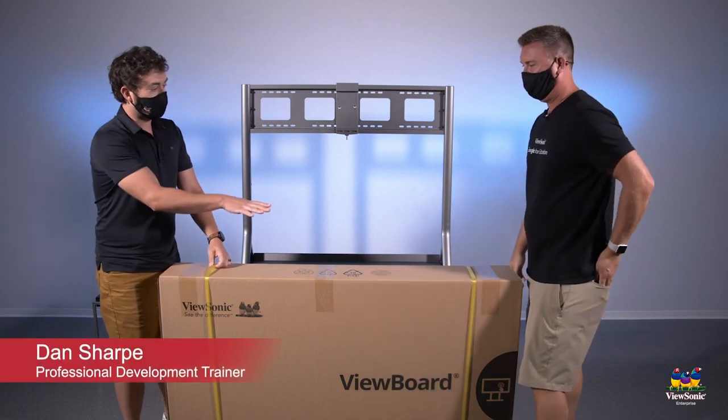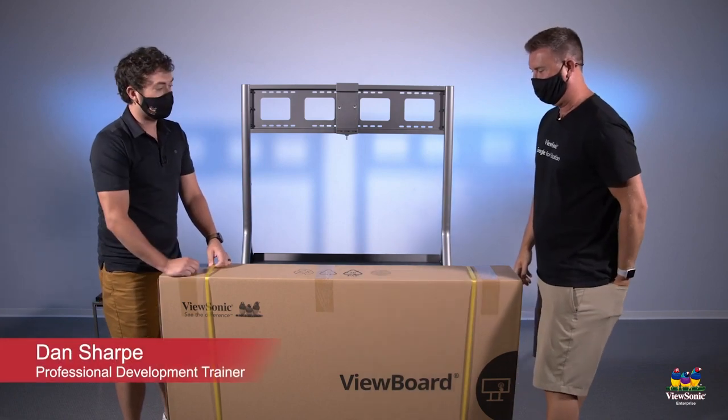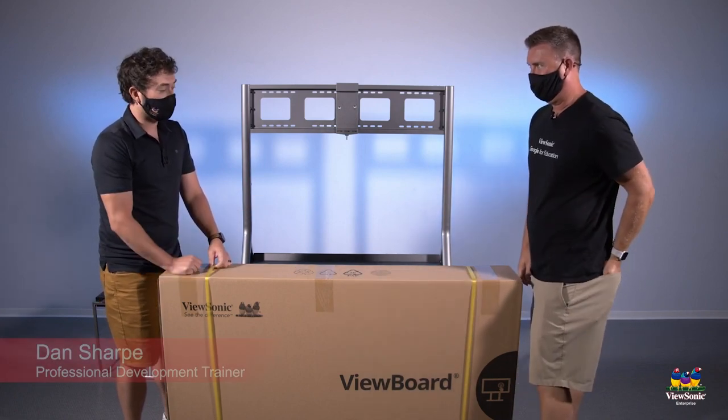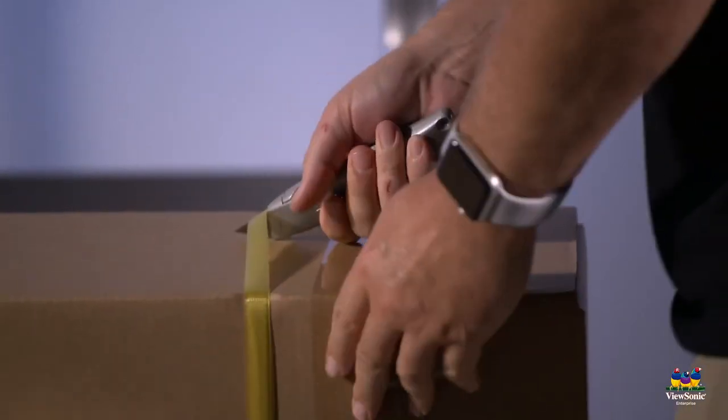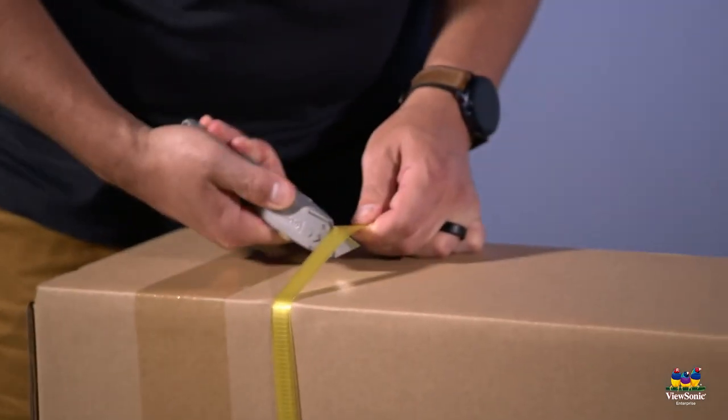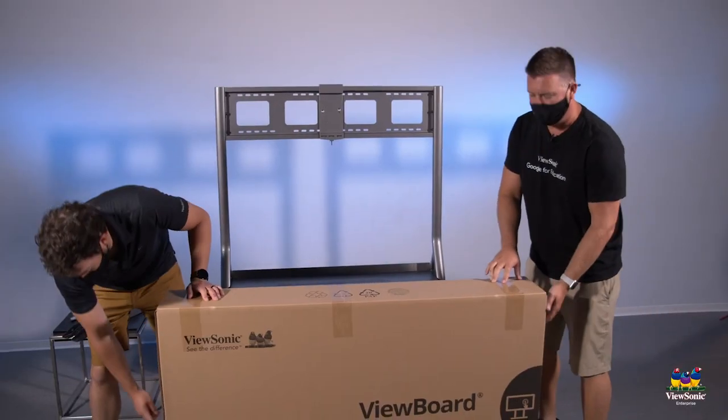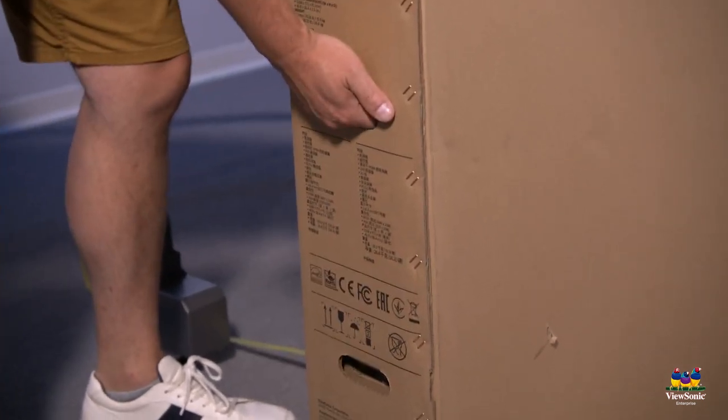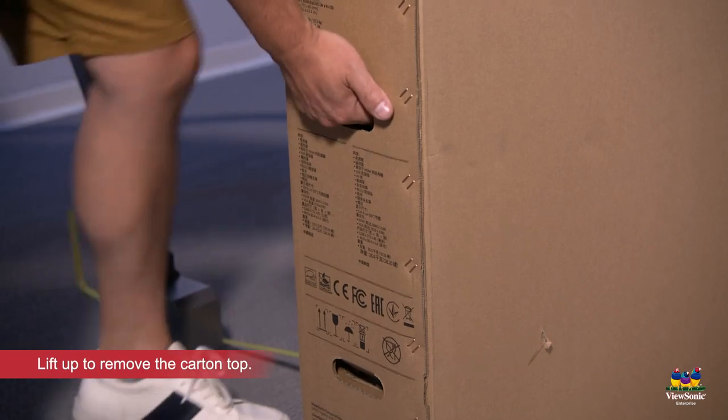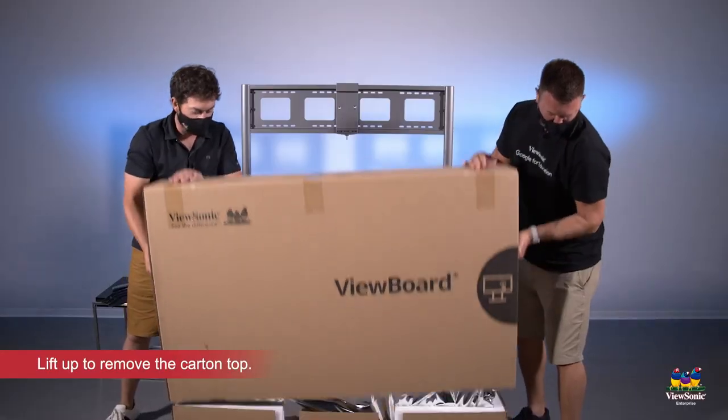First, start by cutting the straps that are securing the panel. Be careful with the blade. On the side you'll notice there are two handles. The bottom one is used to carry the panel while the top one will remove the top. Grab the top handle and pull up to remove the top.